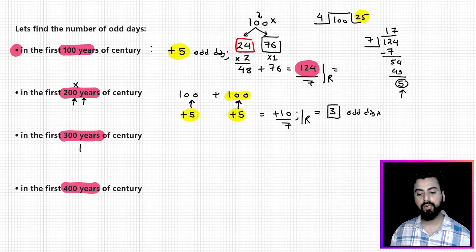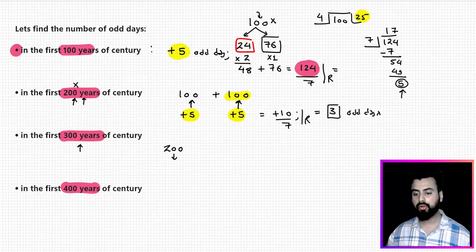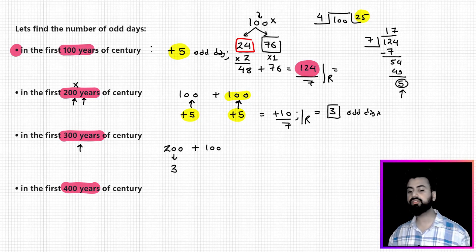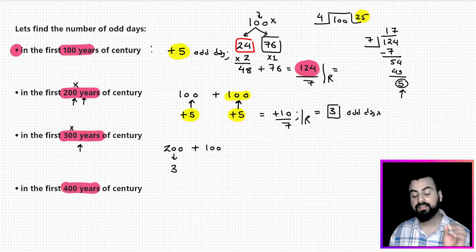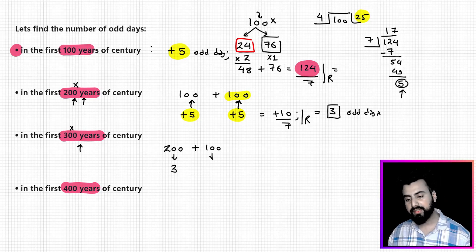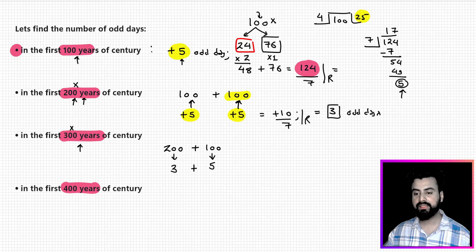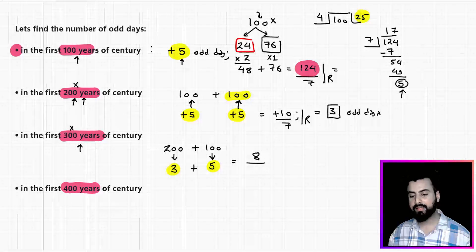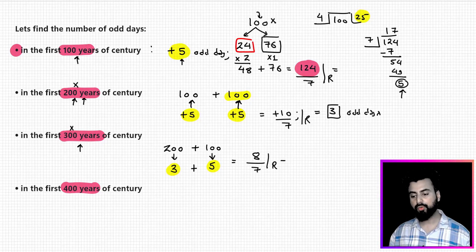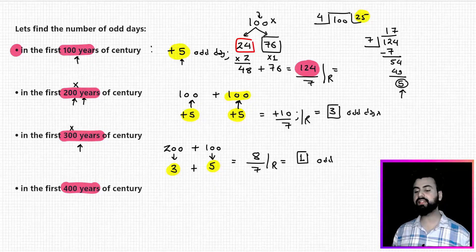For the first 300 years, we already know the first 200 years give 3 odd days. The next 100 years behave the same way — the 300th year is not a leap year — so again 5 odd days. Adding: 3 plus 5 equals 8, and 8 divided by 7 gives a remainder of 1. So in the first 300 years of a century, the number of odd days is 1.